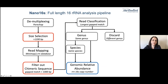We developed a new pipeline called Nano16S, which is more useful for analyzing the full-length 16S rRNA data. The reads are corrected and classified via Kraken and Minimap2. We then use Pavian to visualize the classification and calculate the relative abundance of each organism in the sample.